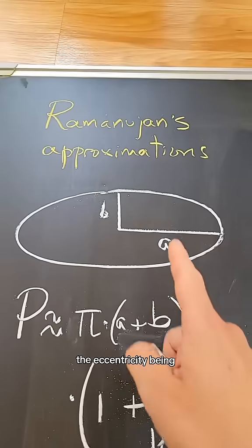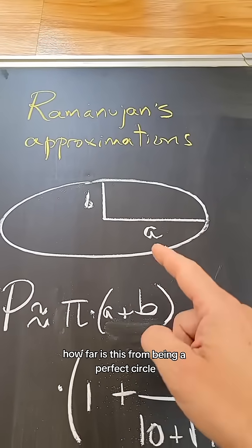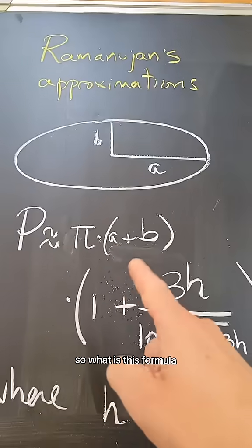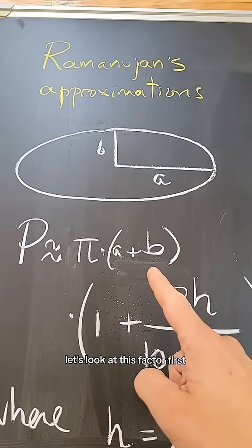The eccentricity being how far this is from being a perfect circle. So what is this formula? Let's look at this factor first.